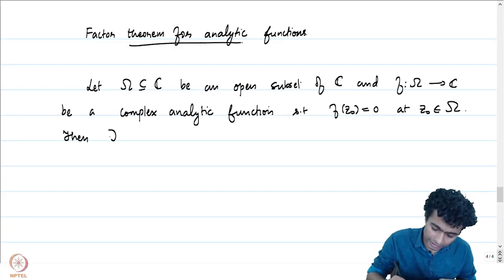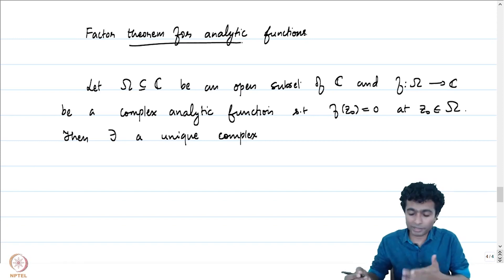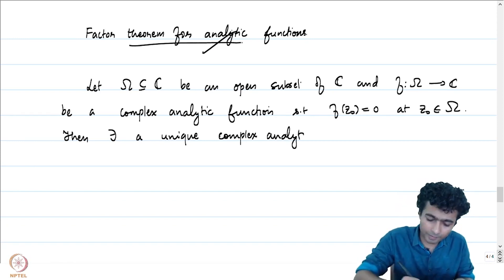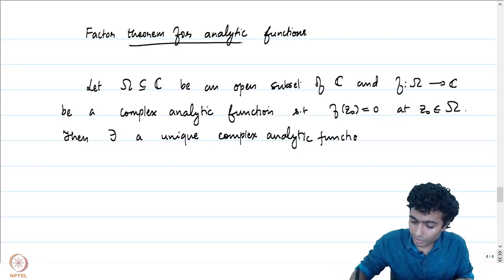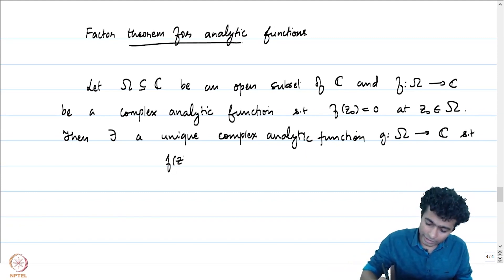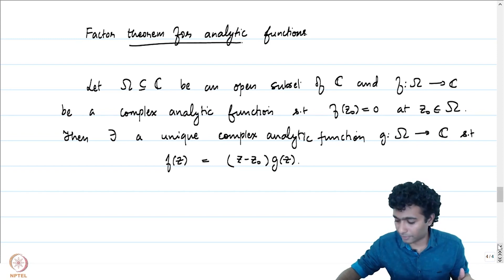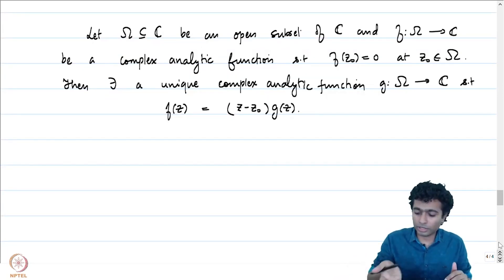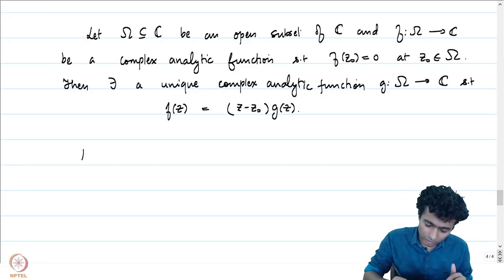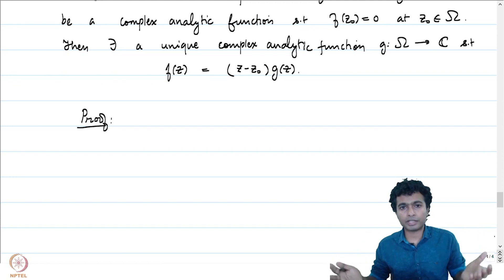Then there exists a unique analytic function g from omega to C such that f of z is equal to (z minus z0) times g of z. Just like we can do for polynomials, we can do something similar for holomorphic functions — factoring out the linear term (z minus z0). Let us give a proof of this.